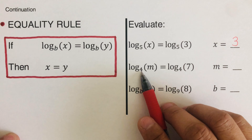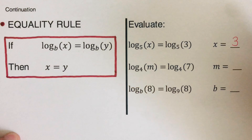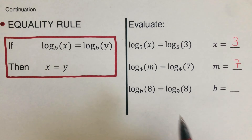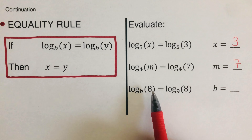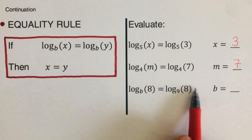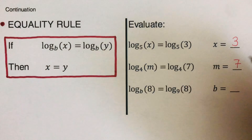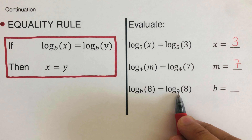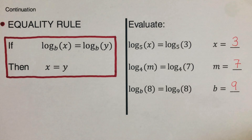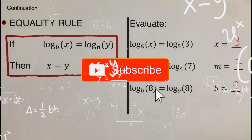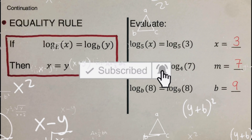For the next two practice problems: in the first one, since both bases are the same, m equals 7. In the second problem, since both sides share the same base 8, b equals 9, matching the value on the right side. If you find this video helpful, hit like and subscribe for more math videos.